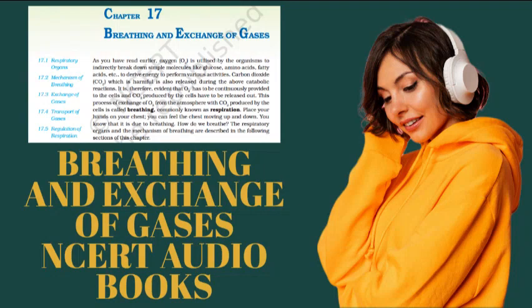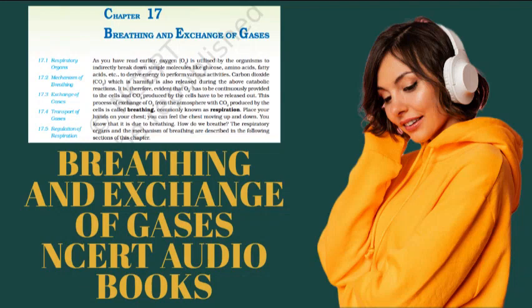Exercises. Question 1: Define vital capacity. What is its significance? Question 2: State the volume of air remaining in the lungs after a normal breathing. Question 3: Diffusion of gases occurs in the alveolar region only and not in the other parts of the respiratory system. Why? Question 4: What are the major transport mechanisms for CO2? Explain. Question 5: What will be the PO2 and PCO2 in the atmospheric air compared to those in the alveolar air? Question 6: Explain the process of inspiration under normal conditions. Question 7: How is respiration regulated? Question 8: What is the effect of PCO2 on oxygen transport?